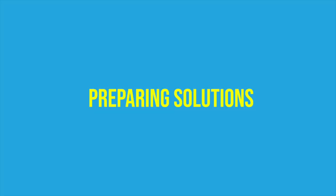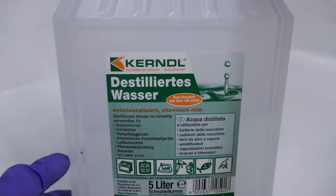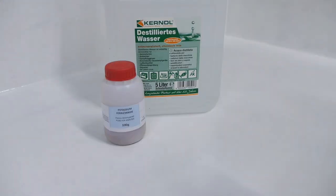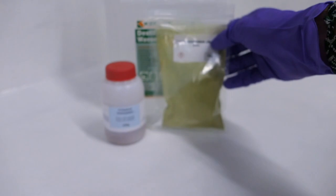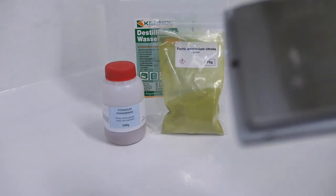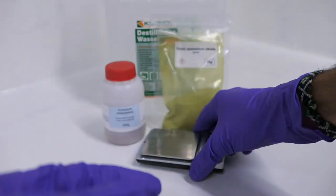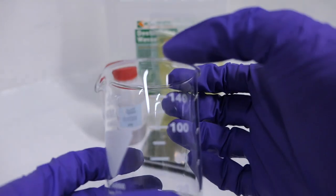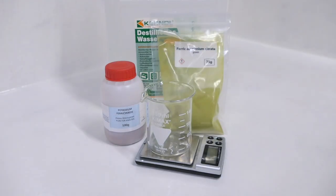Okay, before we start, let's go through the things you will need. First is distilled water, then potassium ferricyanide, ferric ammonium citrate, a scale, a beaker or any other type of container will do, a stir stick for mixing, and some bottles to store solution A and solution B.